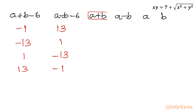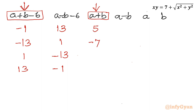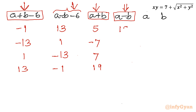To find a + b, I add 6 to the first column: giving values 5, −7, 7, and 19. For a − b, I add 6 to the second column: giving 19, 7, −7, and 5.